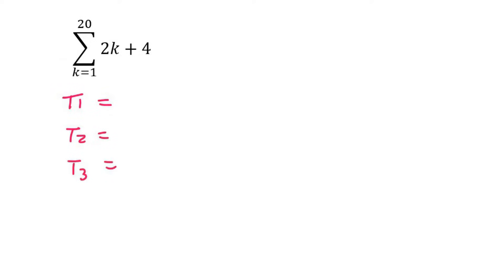How do we do that? Well, you plug whatever this number is into there to find term one. So it'll be 2 times 1 plus 4, which is 6. Then you let this number go up by one for term two. So it'll be 2 times 2 plus 4, which is 8.